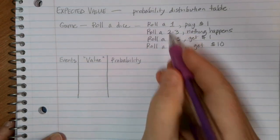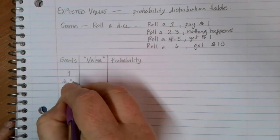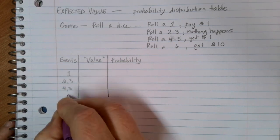In this case, our events that might happen are these different rolls. I might roll a one. I might roll a two or a three. I might roll a four or five. And I might roll a six.